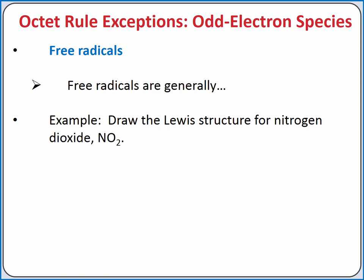Let's draw the Lewis structure for nitrogen dioxide as an example. Nitrogen dioxide has 17 valence electrons. We can draw the Lewis structure first with just single bonds. Nitrogen is the central atom, and the two oxygen atoms are peripheral atoms. We've now used up 4 of the valence electrons and have 13 valence electrons remaining. We'll then satisfy the octet rule for our peripheral oxygen atoms.